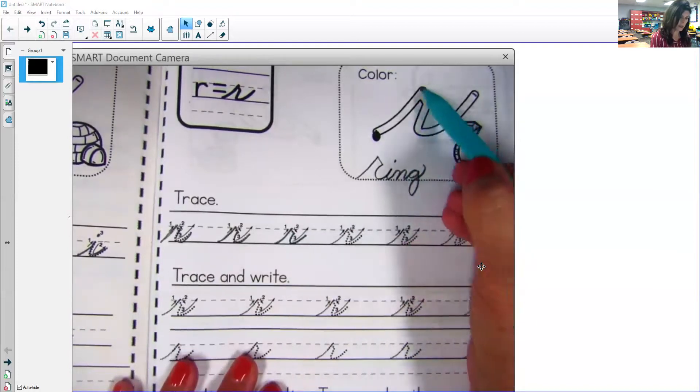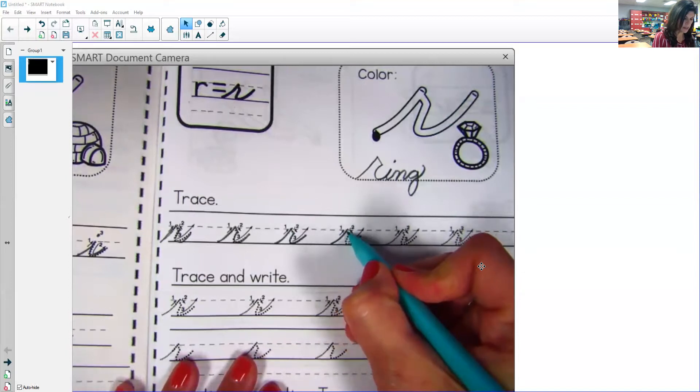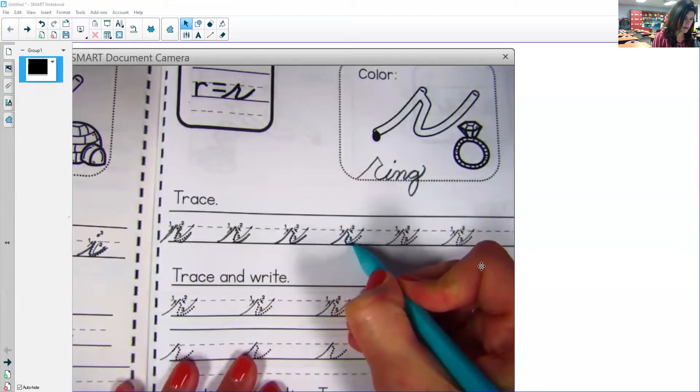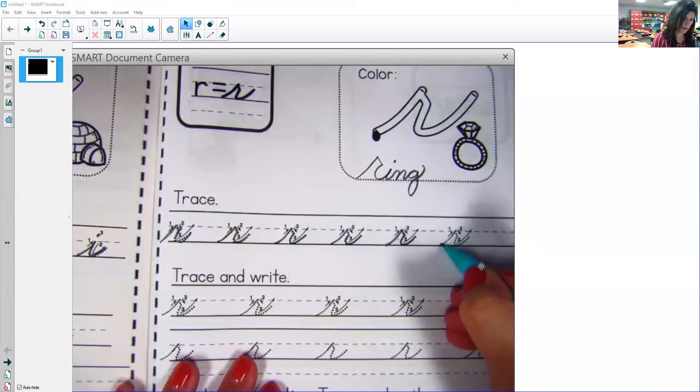And you can see that little slant real good right here. Up, slant down, come down and up. Okay, follow step one, step two, step three. And our last one on that line.